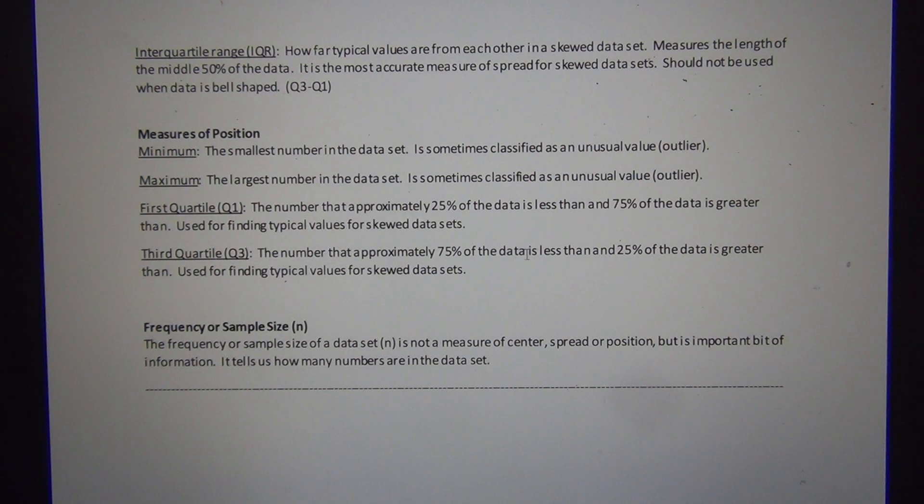And the third quartile, Q3, is the number that approximately 75% of the data values are less than. We said in non-normal skewed data, the typical values are between Q1 and Q3. So these are also used to find typical values in non-normal or skewed data sets.